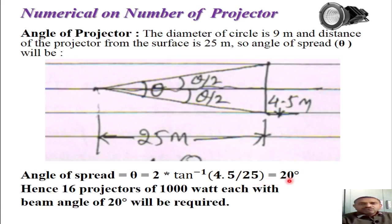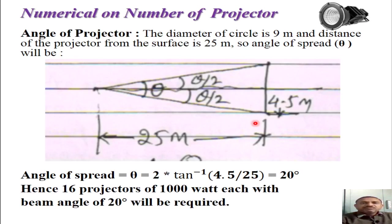The angle of spread required for the projector beam is 20 degrees, meaning theta/2 is approximately 10 degrees. So the complete solution for this problem is: we require 16 projectors, each with a 1000 watt lamp and a beam angle of 20 degrees, to achieve uniform illumination at 100 lux on the building surface. You can similarly solve more numerical problems on calculation of floodlight projectors for a given building surface.